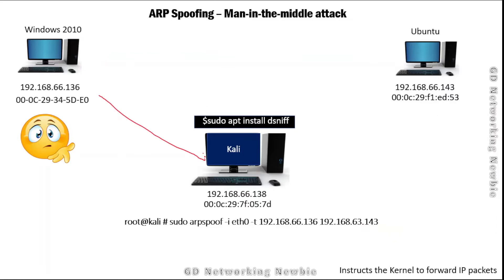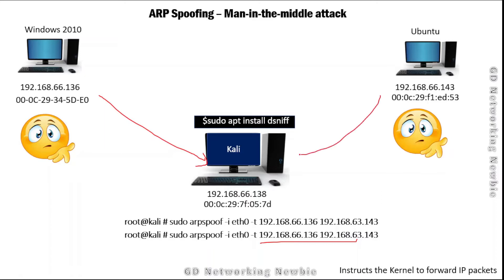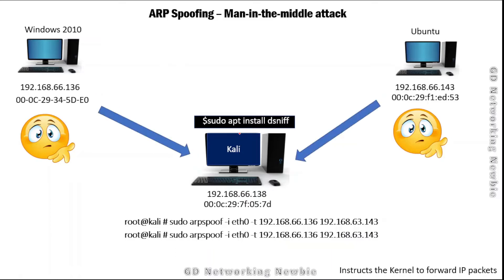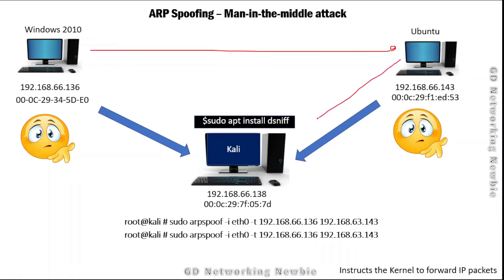With a second arpspoof command, the Ubuntu machine will think that we are the Windows 10 machine. So now Kali is sitting in the middle — both machines will send their traffic to Kali. However, communication between them will be broken because Kali is intercepting the packets but not forwarding them, so ping requests will fail.